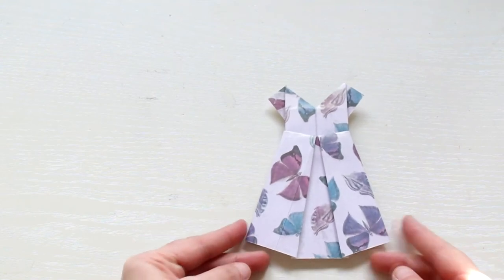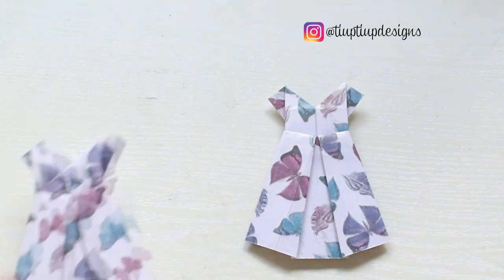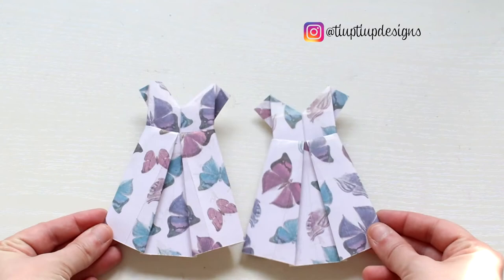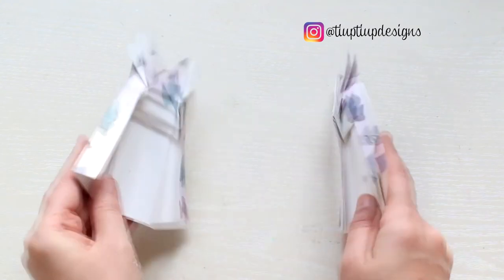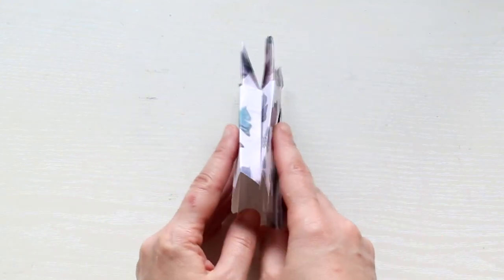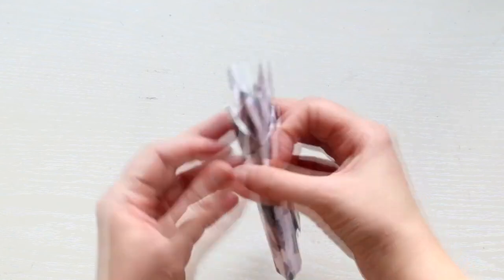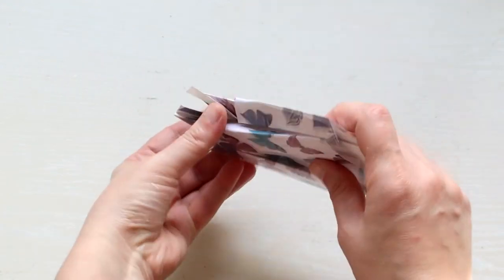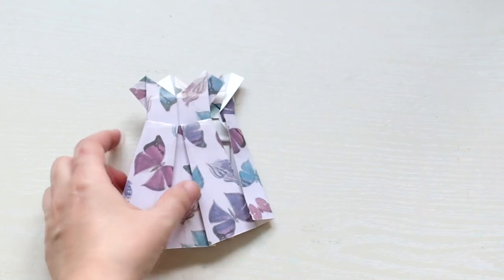And that's it. This is your origami dress. You can leave it as it is, or you can make another one and then glue them together to create one three-dimensional shape.